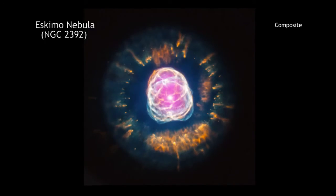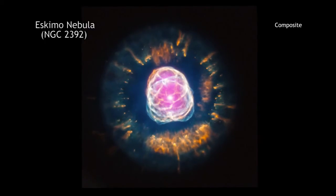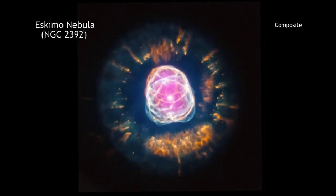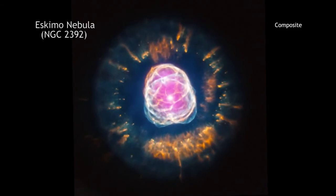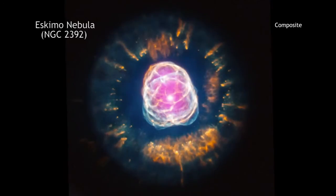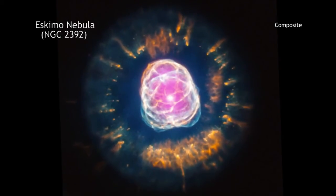Stars like the Sun can become remarkably photogenic at the end of their lives. A good example is NGC 2392, which is located about 4200 light-years from Earth.